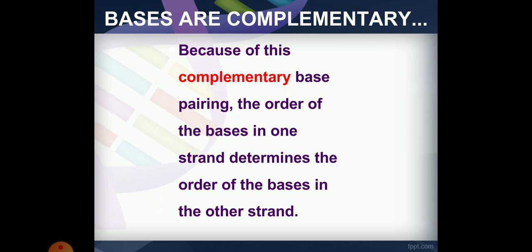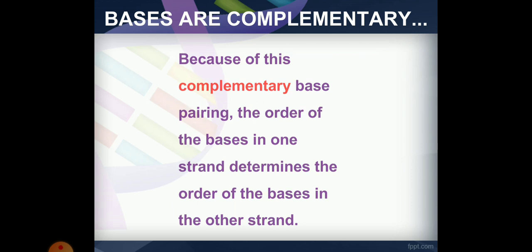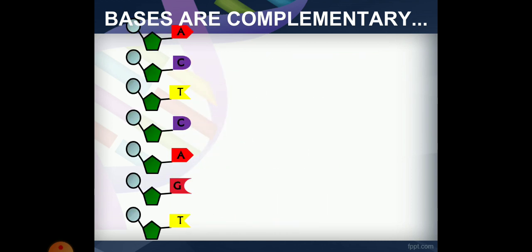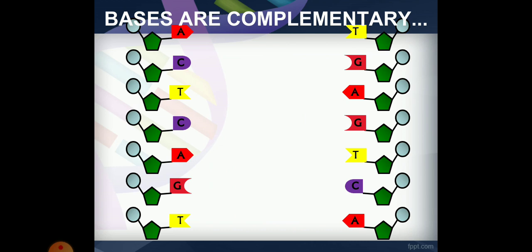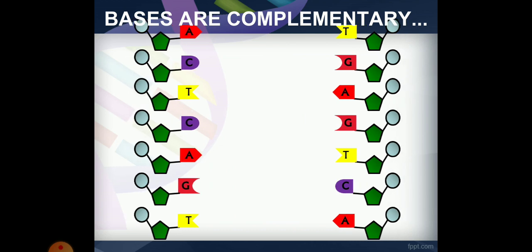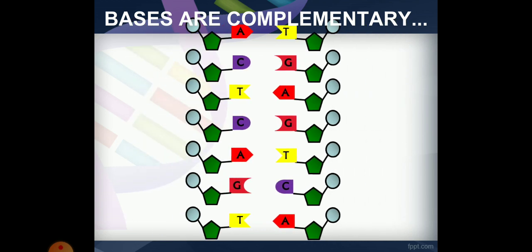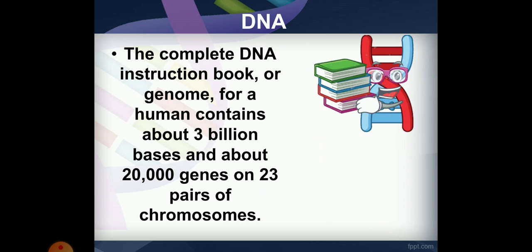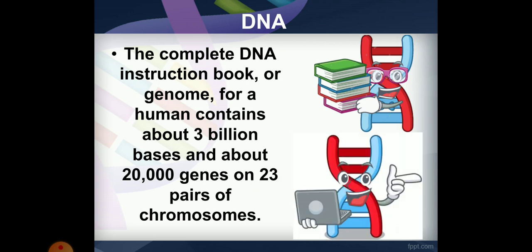One strand has adenine which base-pairs with thymine on the opposite strand — this is called complementary pairing. This DNA has approximately three billion bases.